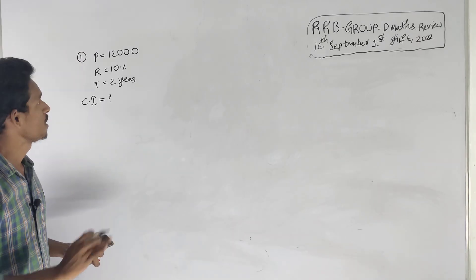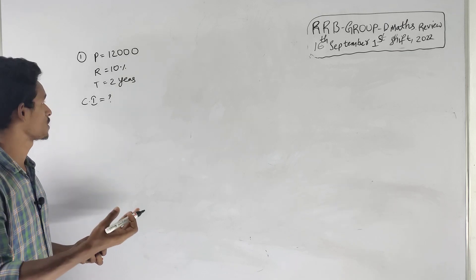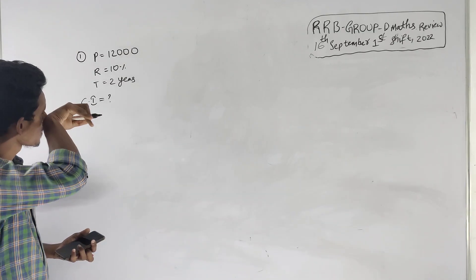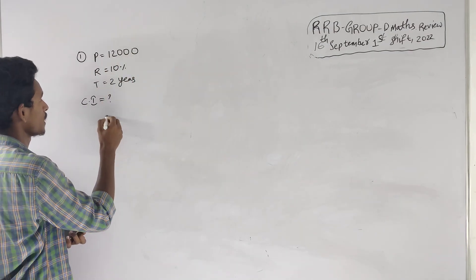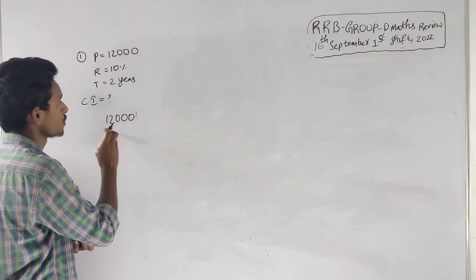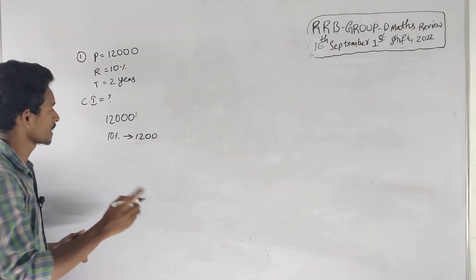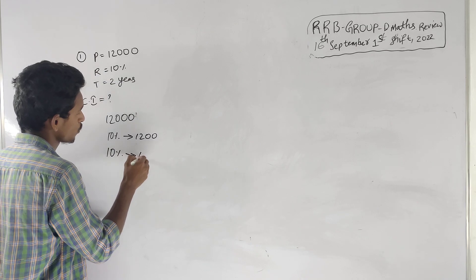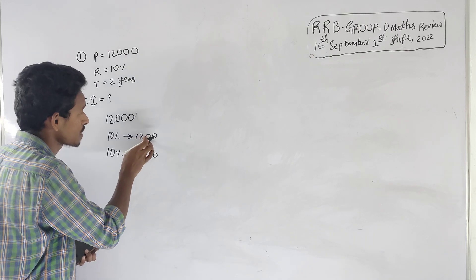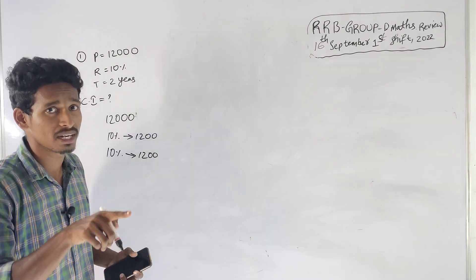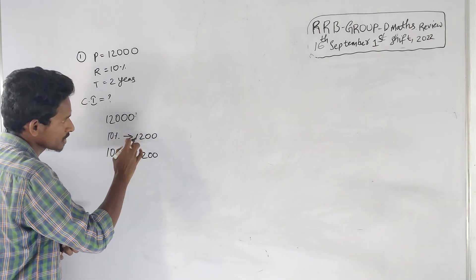The math question is about rate of interest at 10%. The time is 2 years. We are comparing simple and compound interest on 12,000. The first year interest is 1200 and the second year is also 1200 for simple interest.